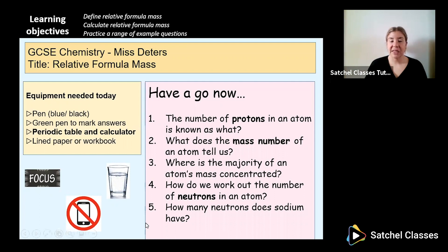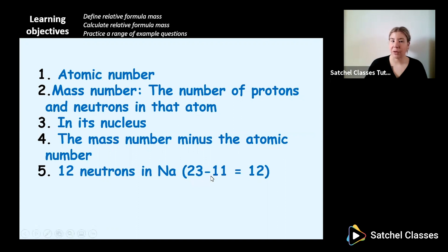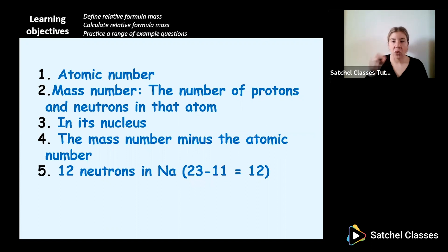Number five: how many neutrons does sodium have? You need your periodic table for this. The answer is 12 — 12 neutrons in Na, or sodium — because you do the mass number minus the atomic number. If you wrote these down, now's an opportunity to get a different color pen and tick or mark them, correcting your answers as you go.